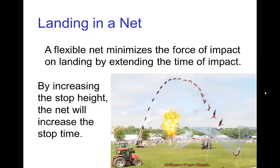If we have an extreme jump, like the human cannonball landing in a net, we need to have a much longer stop height — and that's what the net accomplishes. The net minimizes the force of impact on landing by extending the time of impact, which is what we're calling the stop time. This is done by increasing the stop height, so the net is flexible, and the performer travels a significant distance before they're fully brought to a stop.